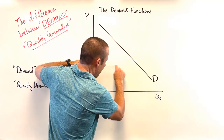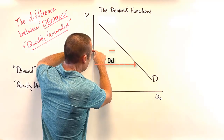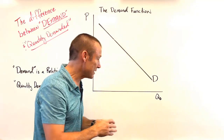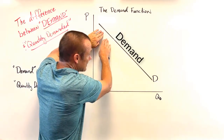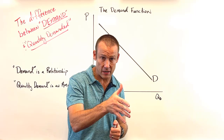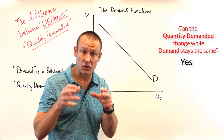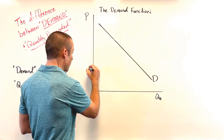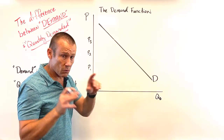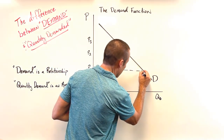At a given price point, that horizontal distance is quantity demanded. At that price, this amount is QD; at that price, this amount is QD. What demand is showing is the quantity we will demand at every single price point — it is the entire relationship, it is the line itself. Can the quantity demanded change and yet demand not change? The answer is absolutely yes.